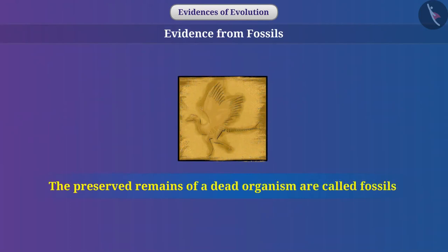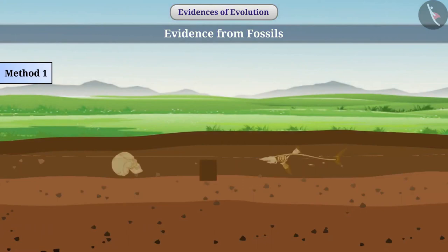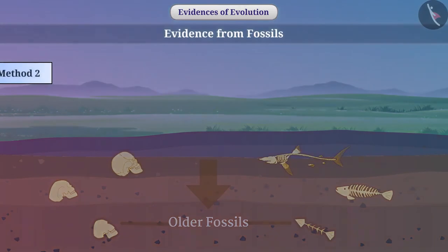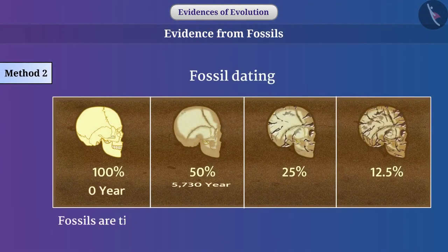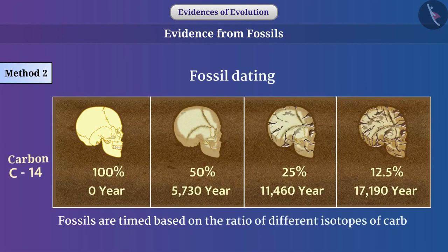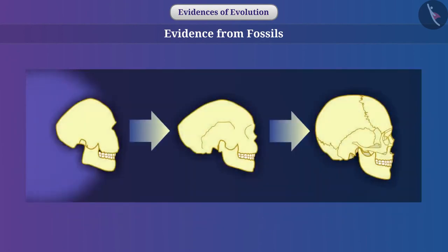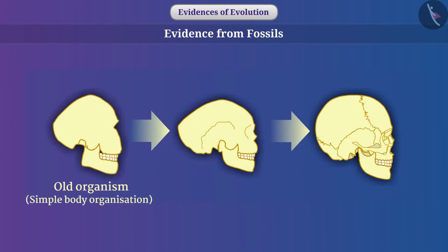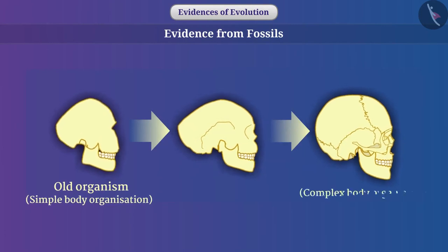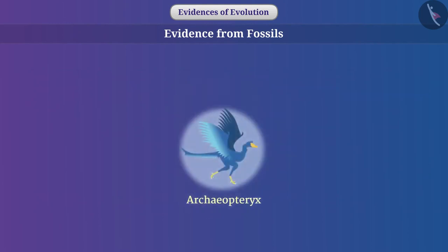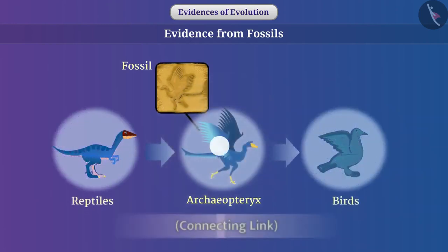Evidence from fossils: The preserved remains of a dead organism are called fossils. One method of finding out how old fossils are is by digging into the earth — the deeper the fossils are found, the older they are. Another method is fossil dating, in which fossils are timed based on the ratio of different isotopes of carbon found in a fossil. From the study of fossils, it is known that the body organization of the oldest living organisms was simple and gradually became complex with time. Archaeopteryx was an ancient bird whose fossils give us the idea that birds have evolved from reptiles — it is the connecting link between these animals.